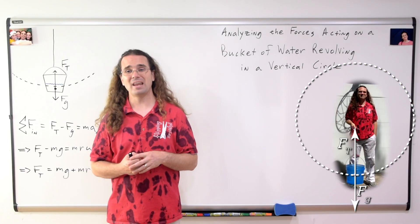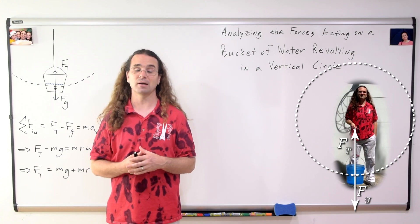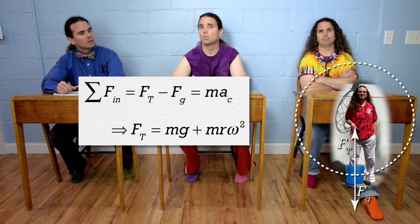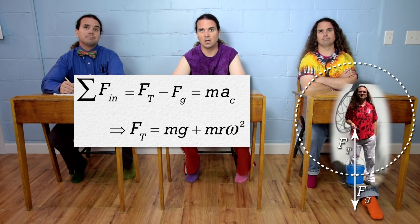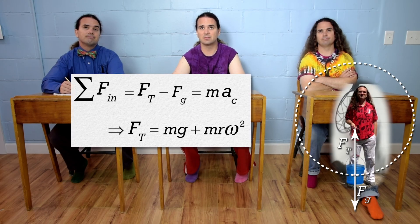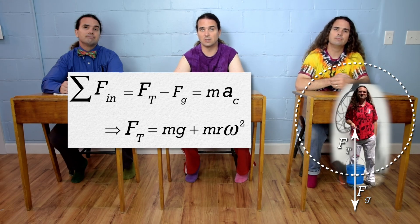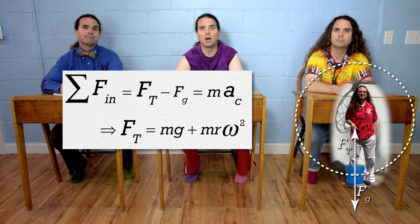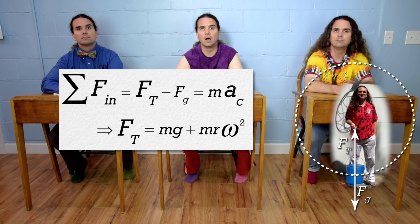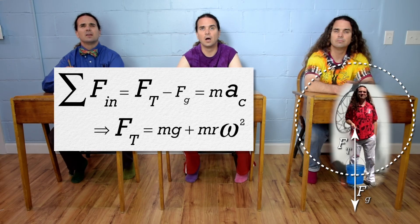Bobby, what happens to the centripetal force if I increase the angular speed of the bucket? Well, we know the force of tension increases. The force of gravity will remain the same, so the centripetal force will increase as well. In other words, a larger angular speed requires a larger force of tension to cause a larger centripetal force to cause the bucket to continue to revolve in a vertical circle.